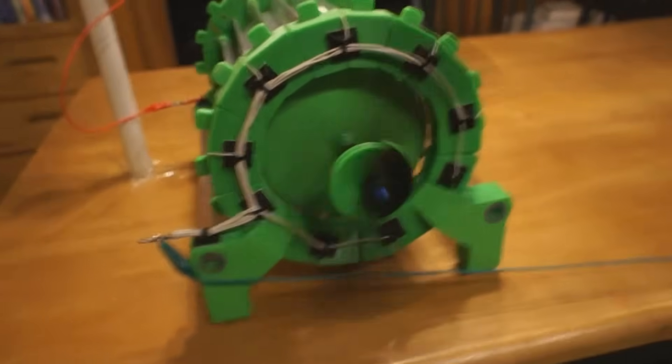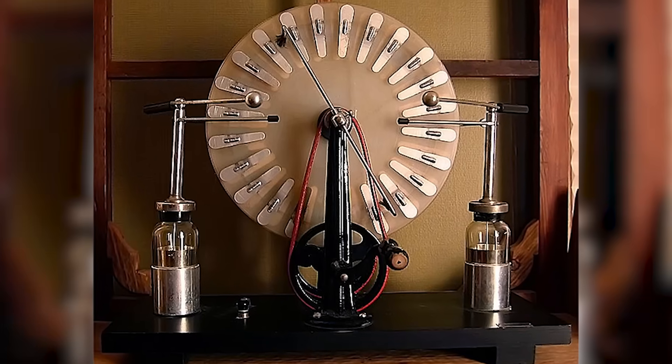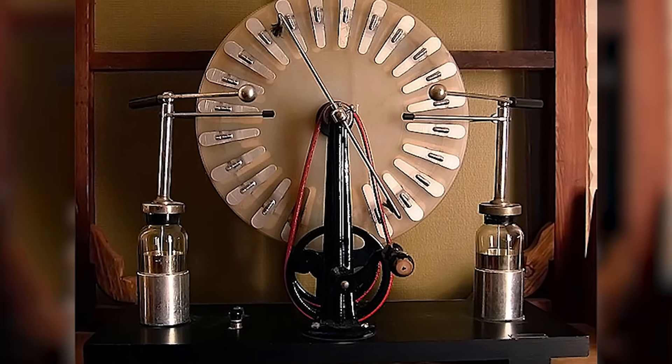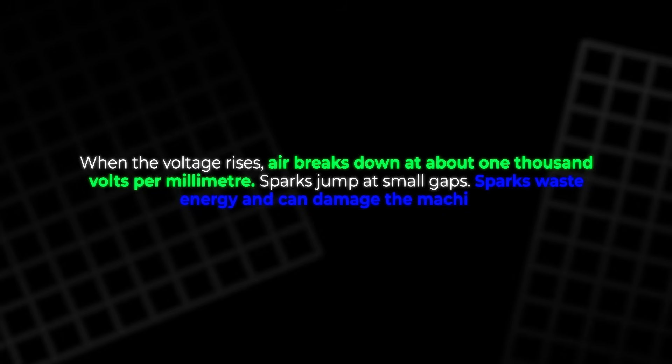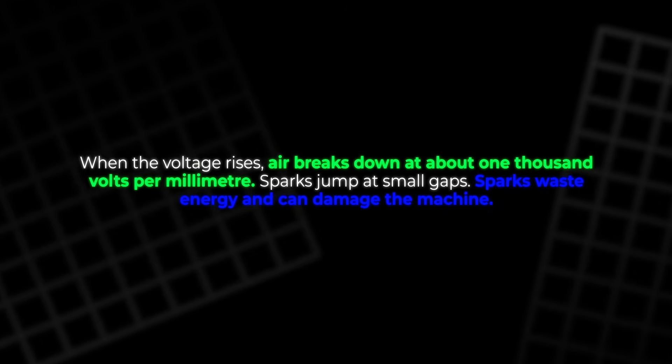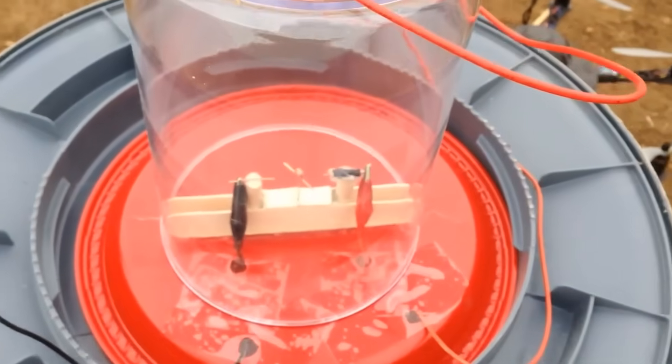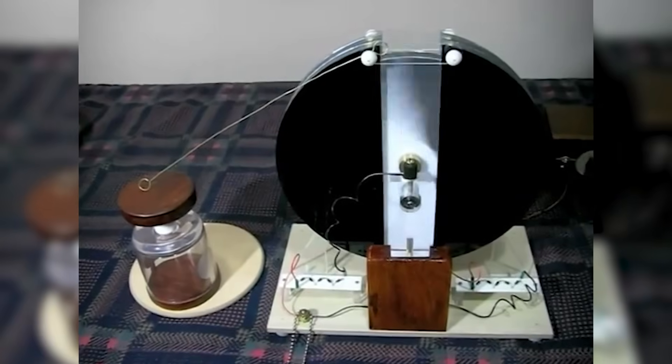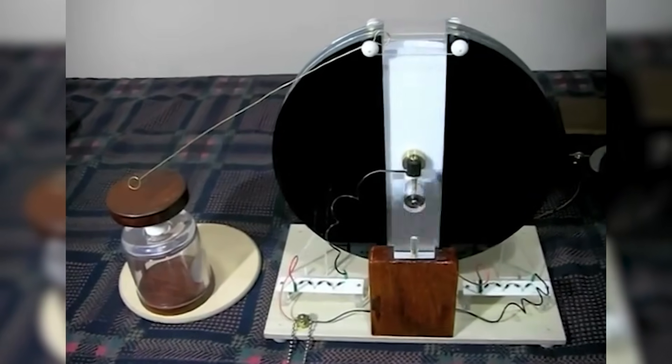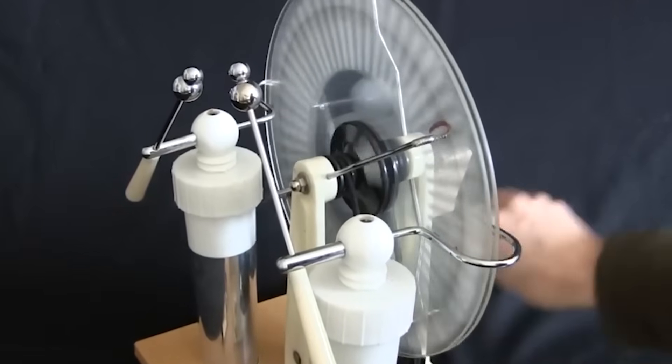This particular motor uses nails not only because they are simple, but also because they solve a problem. Some earlier designs placed electrodes so close that they nearly touch the rotor. When the voltage rises, air breaks down at about 1,000 volts per millimeter. Sparks jump at small gaps. Sparks waste energy and can damage the machine. By spacing the nails at a safe distance, this design avoids arcing. Instead, the motor uses induction. The positive charge in the air pushes the negative charge onto the drum surface. The drum rotates because the electric field is constantly trying to shift charges as the foil passes the combs.